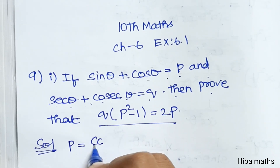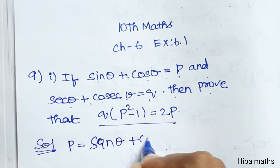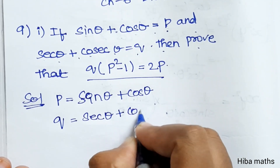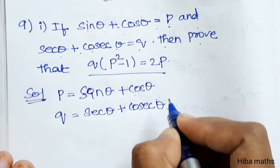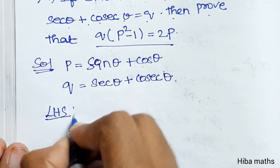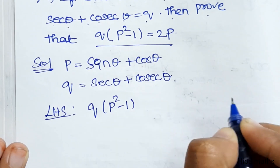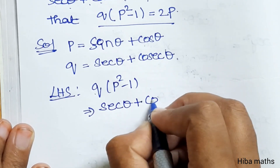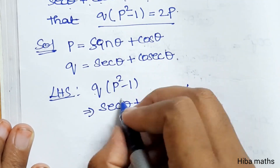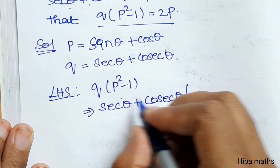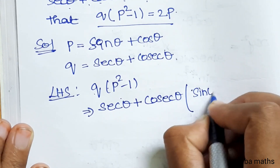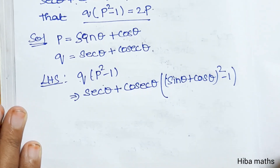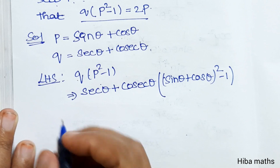P is equal to sin θ + cos θ, and Q is equal to sec θ + cosec θ. To prove the LHS part: Q(P² − 1). That is equal to the Q value, which is sec θ + cosec θ, into (sin θ + cos θ)² minus 1. Substitute the values and solve the problem.